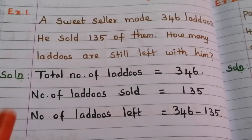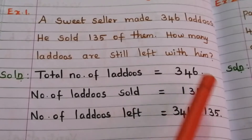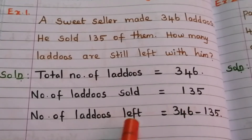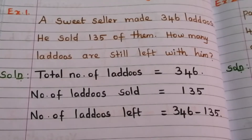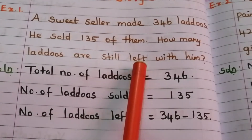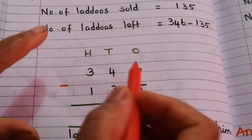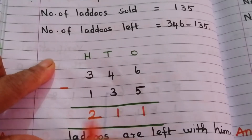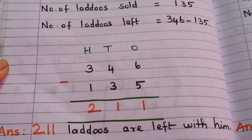In the solution, write down the given data: total number of laddoos = 346, number of laddoos sold = 135. So number of laddoos left = 346 minus 135. Write these two numbers vertically and do the subtraction. 'Left' is the keyword for subtraction. 6 minus 5 = 1, 4 minus 3 = 1, 3 minus 1 = 2. The answer is 211. Two hundred eleven laddoos are left with him.